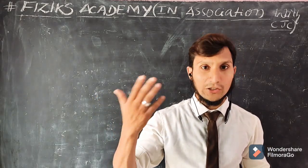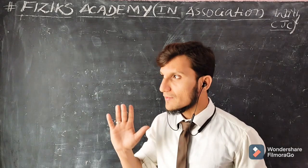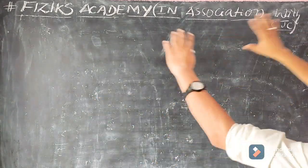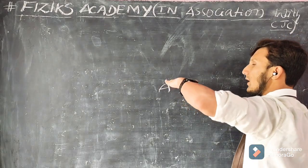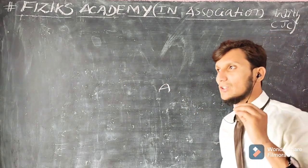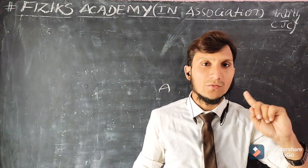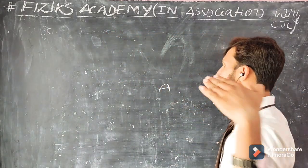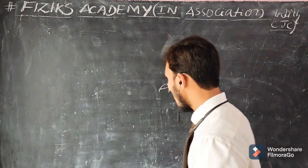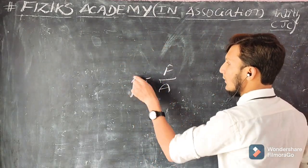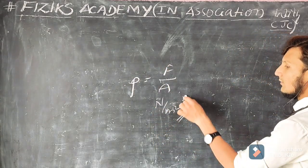Pressure is the force acting on a given area. If we have a pole with some area A and a force is exerted perpendicular to it, that is pressure. Pressure always acts in a perpendicular manner on a given area. Its unit is Newton per meter square.